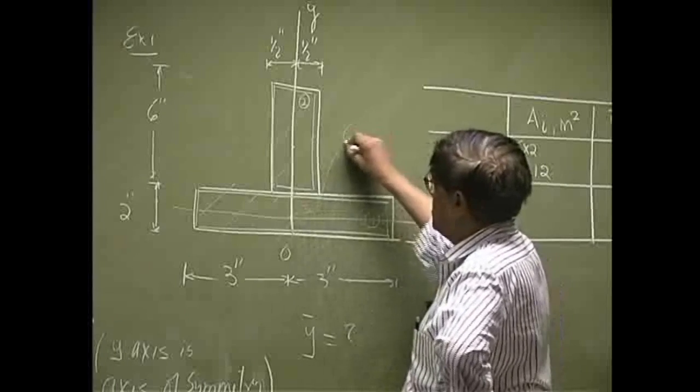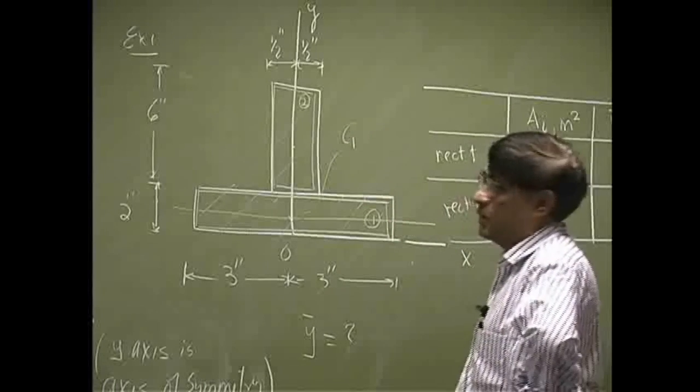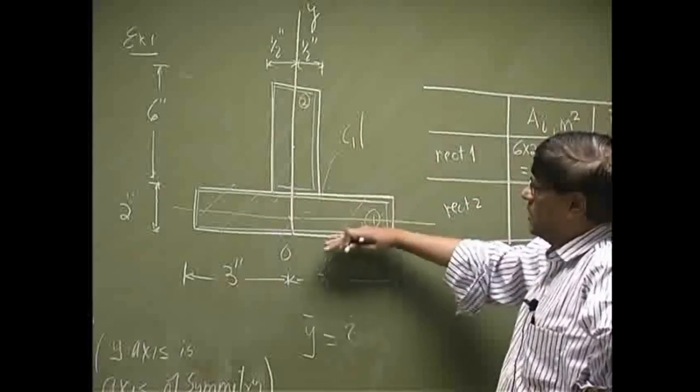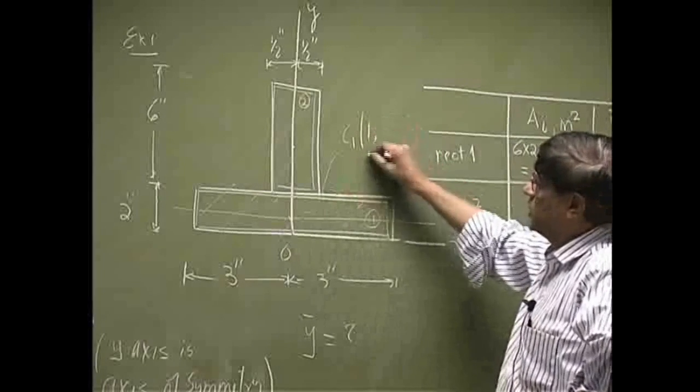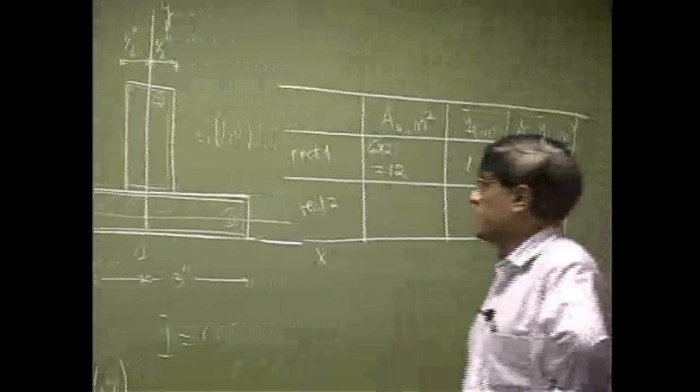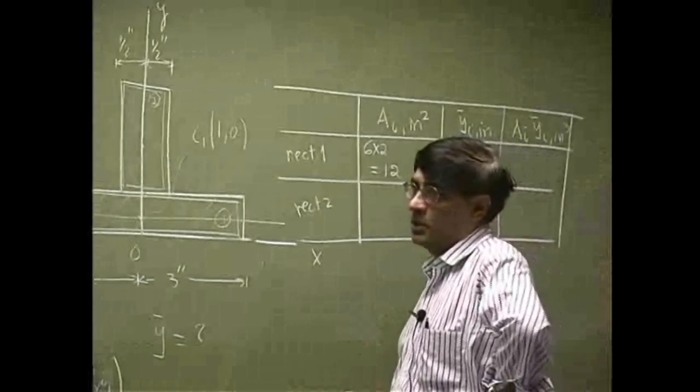And it should be at the middle of this. That means, over here, let's call this as c1. The c1 is going to be half of this. This one, the y part was 0, so we take this as 1. That's for the first area.